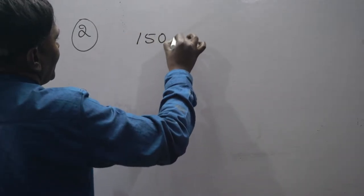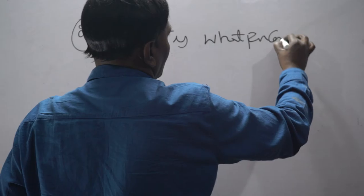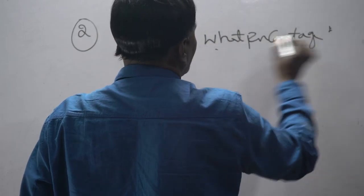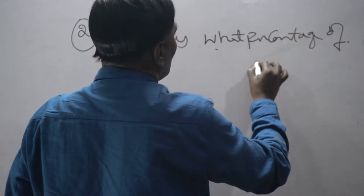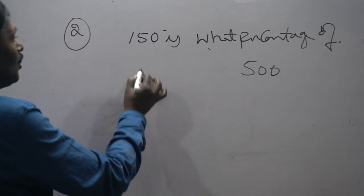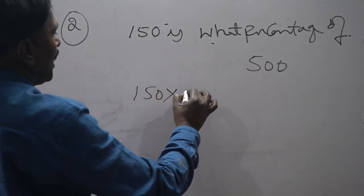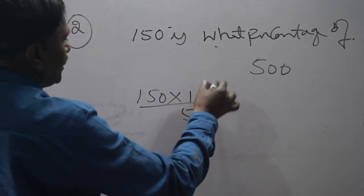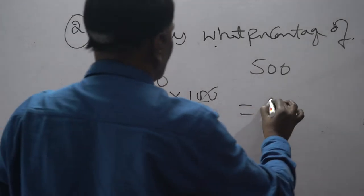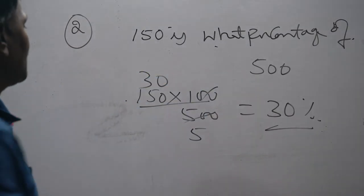150 is what percentage of 500? See, 150 is what percentage of 500? So how to find? This is 150 is what percentage of 500. 150 into 100 by 500. So 5s, 5 how many times? 5 threes. This is how much? 30 percentage.